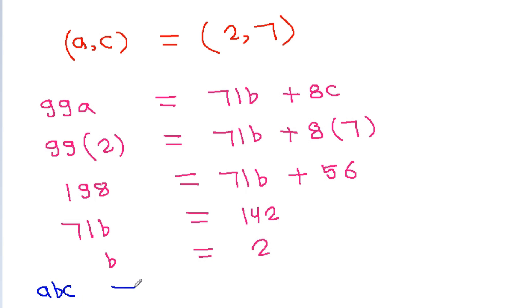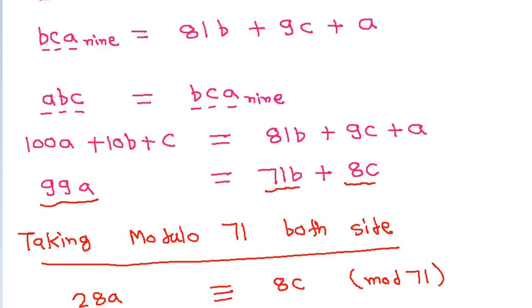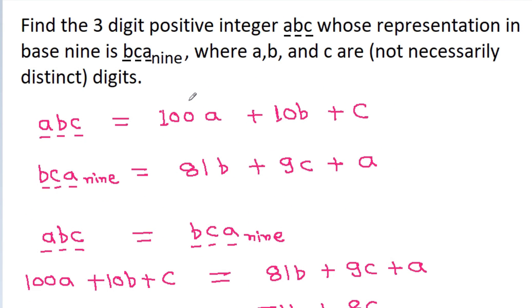So a, b, and c are: a is 2, b is 2, and c is 7. The 3-digit number will be 227.